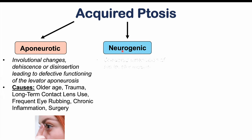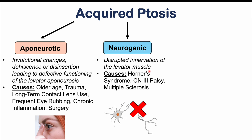Neurogenic ptosis is due to disrupted innervation of the levator muscle, or disruption of sympathetic input to Mueller's muscle. Causes include Horner syndrome, from compression of the sympathetic chain, which particularly affects Mueller's muscle. Cranial nerve 3 palsy disrupts innervation of the levator muscle, causing ptosis. Multiple sclerosis is also another important cause.